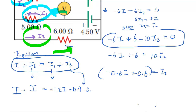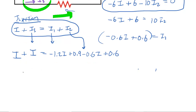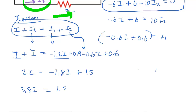Now substituting I3, I1, and I2 into the junction rule equation I plus I3 equals I1 plus I2, we get 2I on the left side. On the right, combining negative 1.2I and negative 0.6I gives negative 1.8I, and 0.9 plus 0.6 equals 1.5. Adding 1.8I to both sides gives 3.8I equals 1.5. Dividing both sides by 3.8, we get I is equal to approximately 0.39 amps — the correct answer for the current flowing through the ammeter.